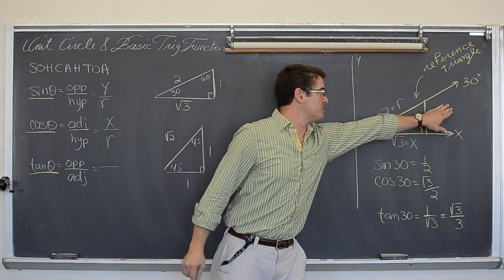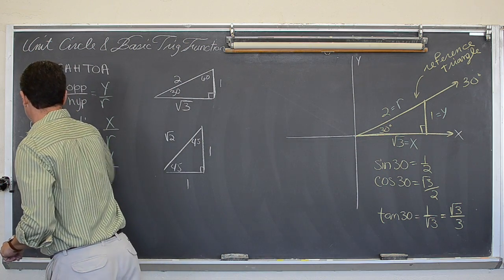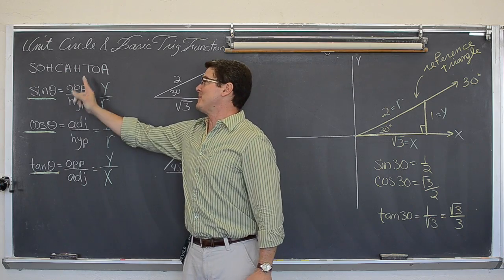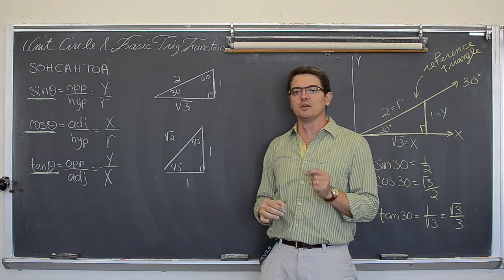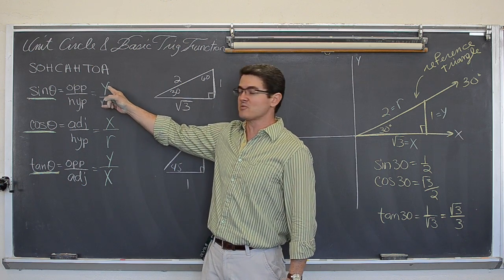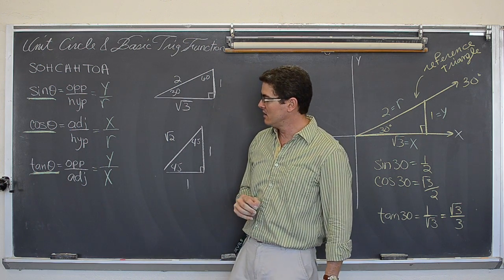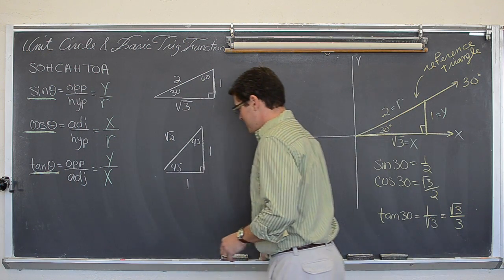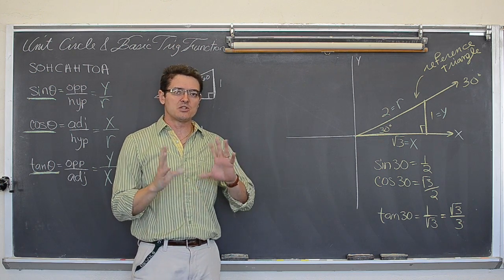So tangent, which is opposite over adjacent, is going to be y over x. Please learn these abbreviated terms: y over r for sine, x over r for cosine, and y over x for tangent. I still do not want to throw the unit circle at you just yet, because I really want you to know where these numbers come from — not just say here is a picture from the book, just memorize it.